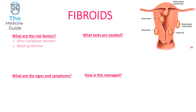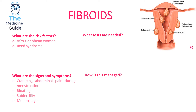Women from an African Caribbean background or women with Reed syndrome are at greatest risk of developing fibroids. These women will suffer from cramping abdominal pain during menstruation, bloating, subfertility, and menorrhagia — that's heavier periods.